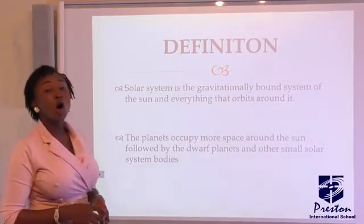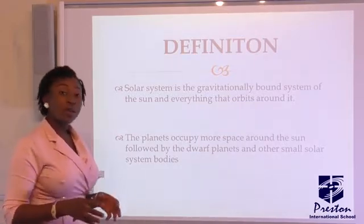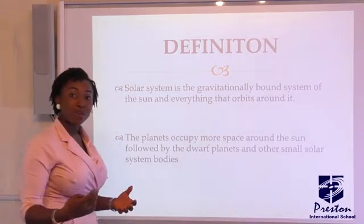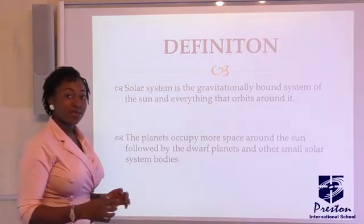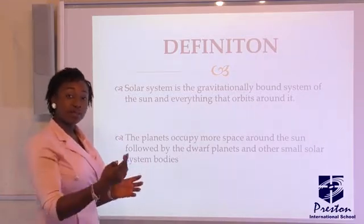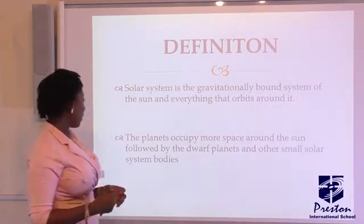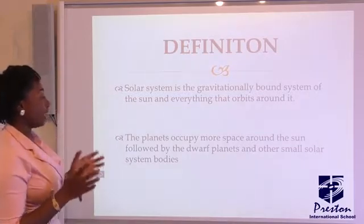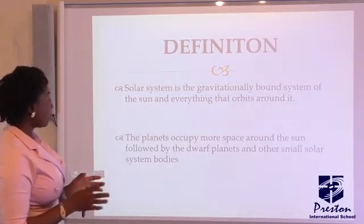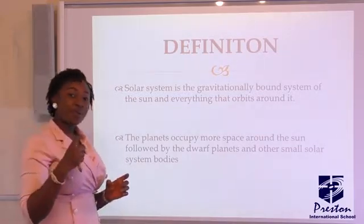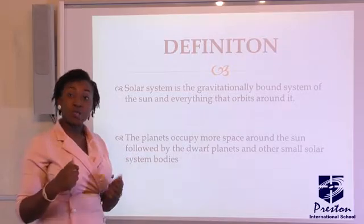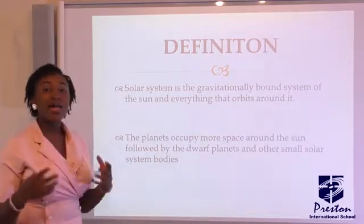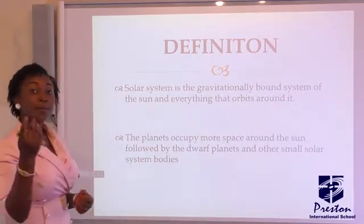Now let's talk about the definition of the solar system. The solar system is a gravitationally bound system of the sun and everything that orbits around it — all the heavenly bodies that orbit around the sun. The planets occupy more space around the sun, followed by the dwarf planets, e.g. Pluto, and other small solar system bodies.